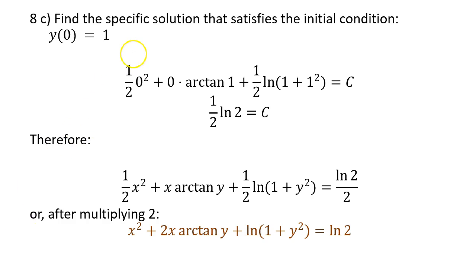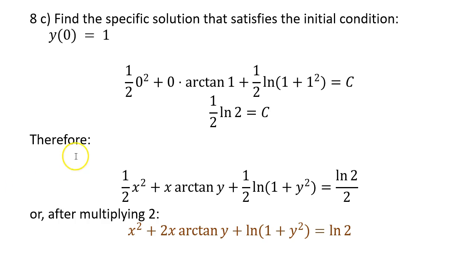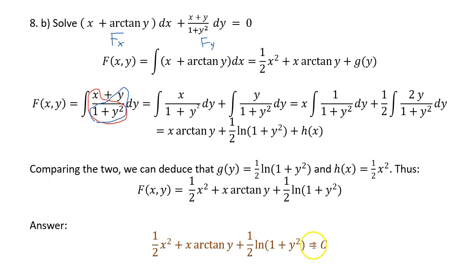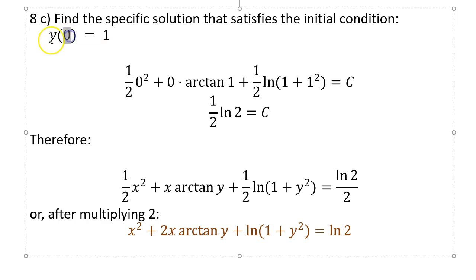Part c: find the specific solution satisfying the initial condition y(0) = 1. If you forgot to include the constant c and stopped early, this part would be impossible to solve. Since we do have c, we just need to determine its value.